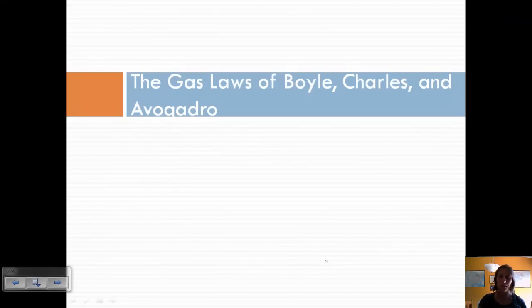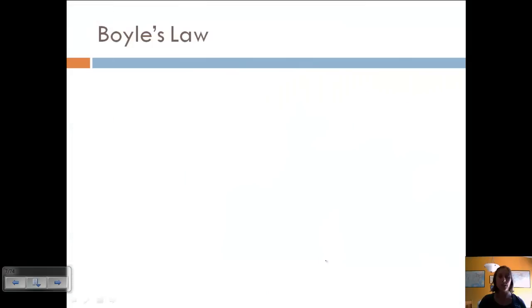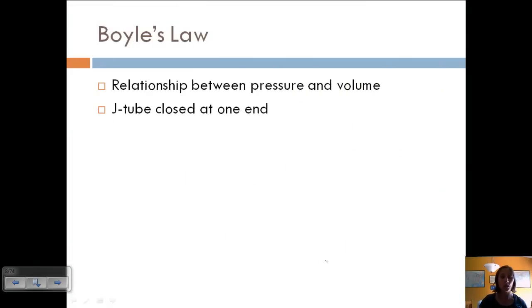So you're going to want to know those conversion factors. Let's talk about some of the different gas laws. So the first law we're going to look at is Boyle's Law. This gives the relationship between pressure and volume, and so we have what's called a J-tube that's closed at one end, and this is how experiments were done with pressure and volume. There's an inverse relationship that exists between pressure and volume.